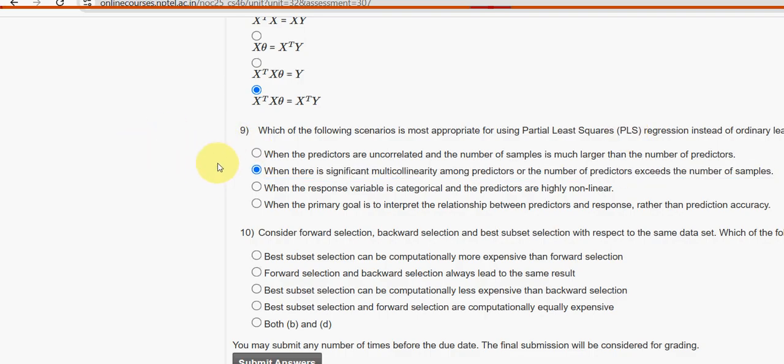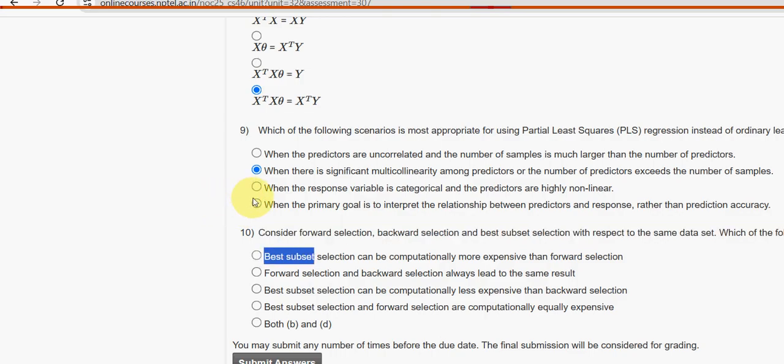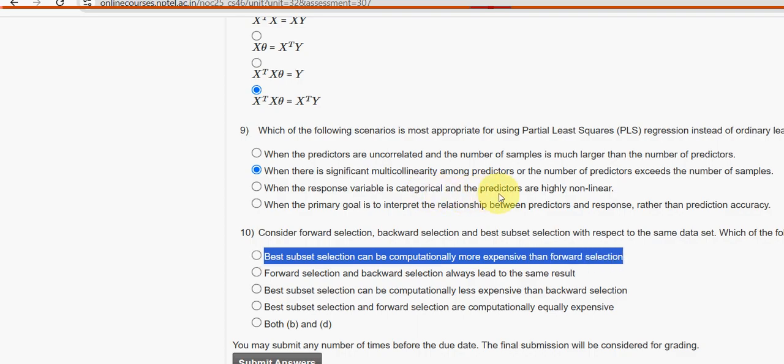Moving on to the final question of the assignment, Week 2 assignment. Consider forward selection, backward selection, and best subset selection with respect to the same dataset. Which of the following is true? For the tenth and final question, the first option is the probable one: best subset selection can be computationally more expensive than forward selection.